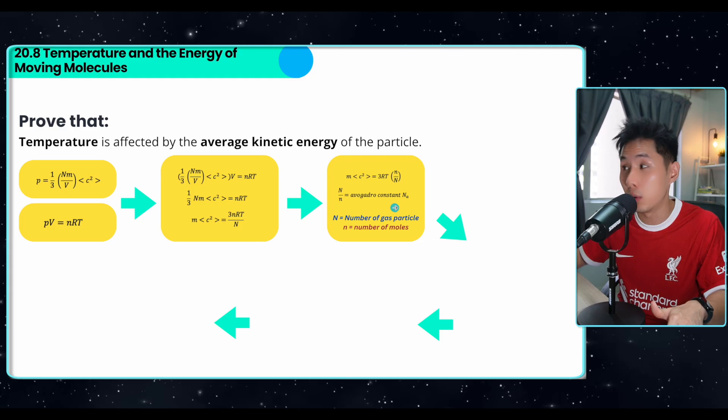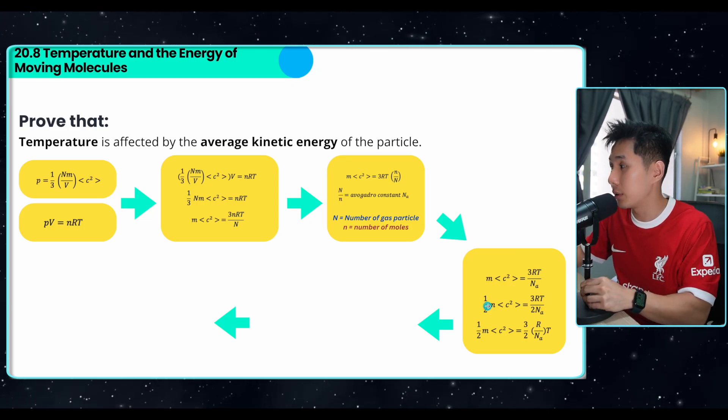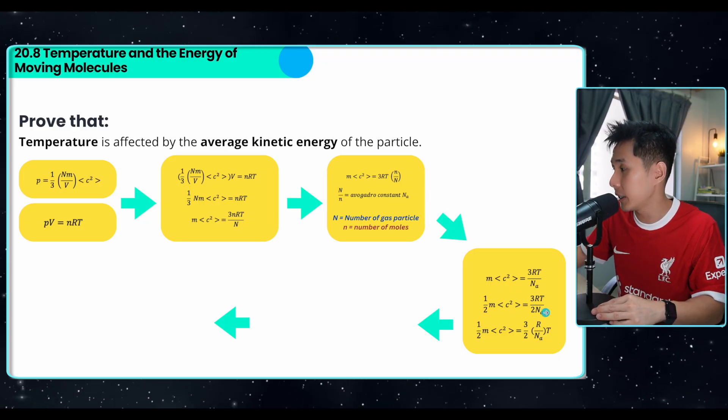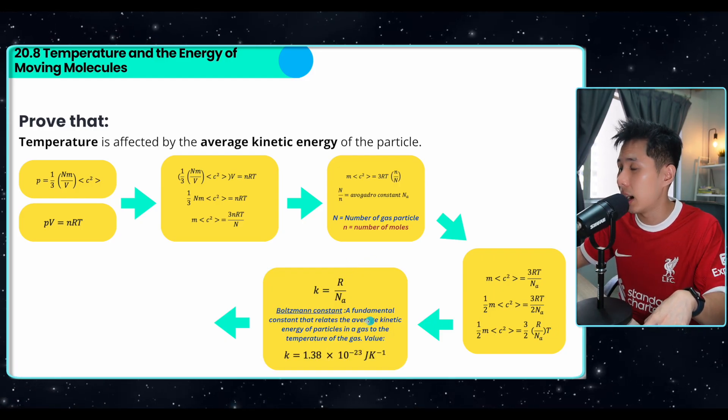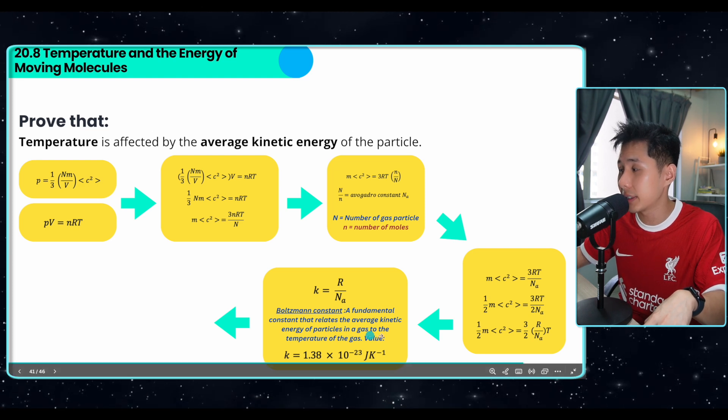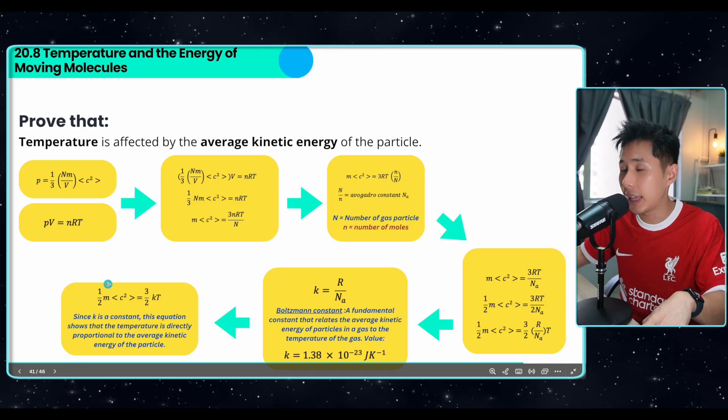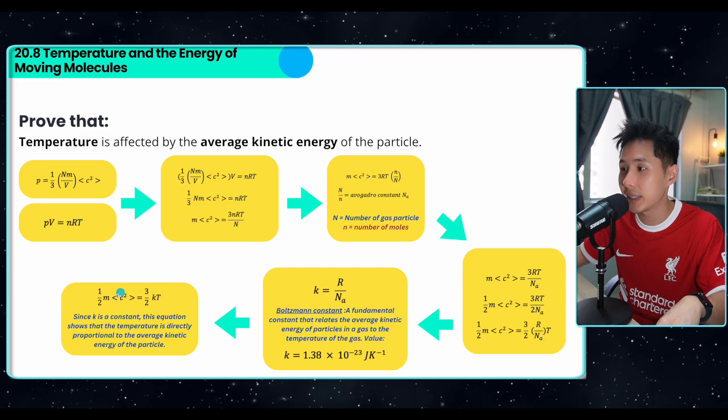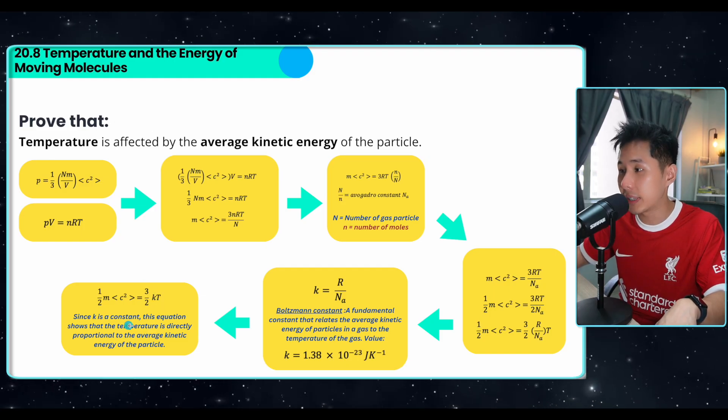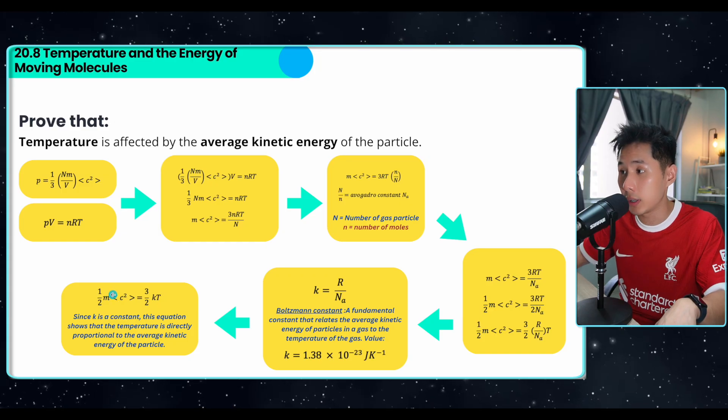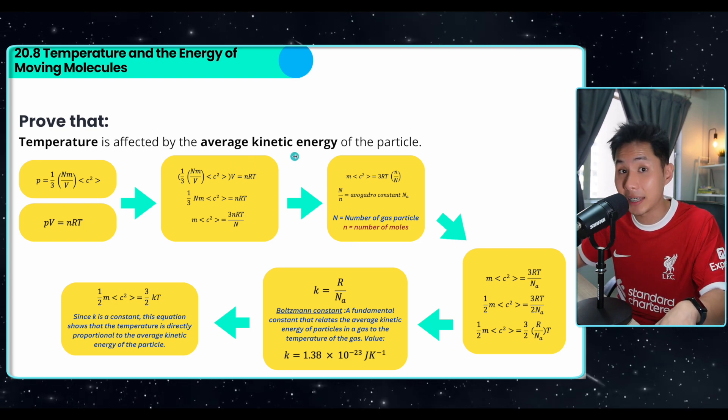We know that n over NA is the Avogadro constant, which is the number of particles in one mole. So we can just reverse this and put down the Avogadro constant at the bottom. So we also add one over two to make this formula looks like the kinetic energy formula to both sides. After that, I'll just change this equation to make it neater. That's because we know that R over NA is what we call the Boltzmann constant, a fundamental constant that relates the average kinetic of particles in a gas to the temperature. So this is the amount of energy that the particle has per Kelvin. So I will just substitute k into here. That's when you can see that half m c squared, which is the kinetic energy, is equal to 3 over 2 kT. And k is constant. And because k is constant, this equation shows that the temperature is directly proportional to the kinetic energy. So the higher this is, the higher the T will be. And with that, we have proven using equation that temperature is affected by the average kinetic energy of the particle.